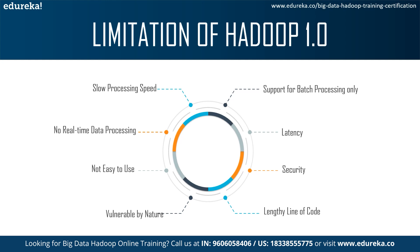Let us see the limitations of Hadoop 1.0 one by one. Number one is slow processing speed — with parallel and distributed algorithms, MapReduce processes larger data sets but requires a lot of time to perform map and reduce tasks, thereby increasing latency. Data distributed and processed over the cluster increases time and reduces processing speed. Number two is support for batch processing only — Hadoop does not process stream data, hence overall performance is slower.